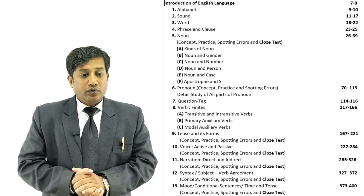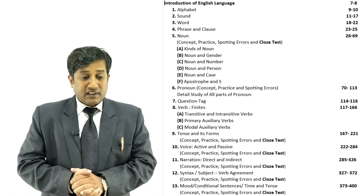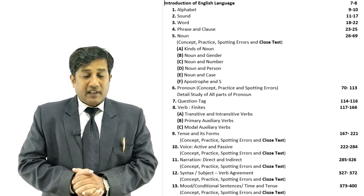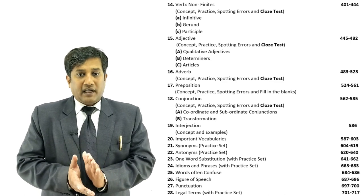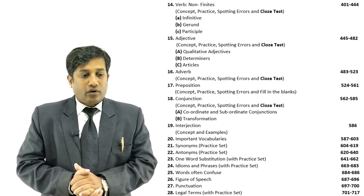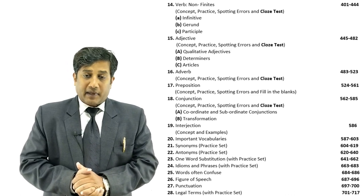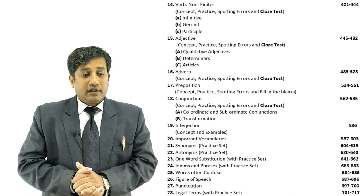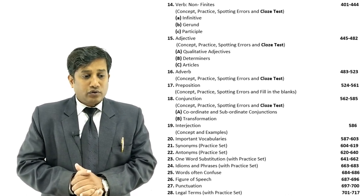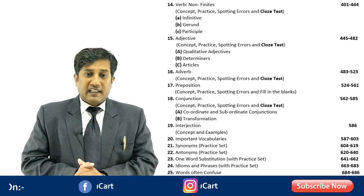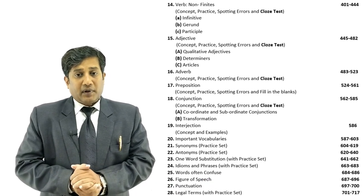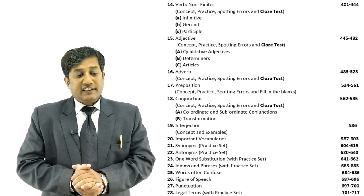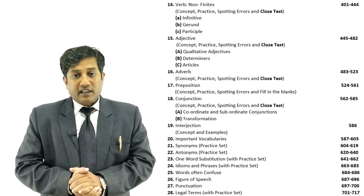The next topic is Mood, also called conditional sentences or time and tense. It also includes concept, practice, spotting errors, and cloze test. Then comes Non-finite — verb has two parts: finite and non-finite. Under non-finite, you will first understand the concept of non-finite, then practice, spotting errors, and cloze tests. Non-finite basically has three parts: first, infinitive; second, participle — which further has three parts: present participle, past participle, and perfect participle — all taught in great depth. The next topic is Adjective, with concept, practice, spotting errors, and cloze test.